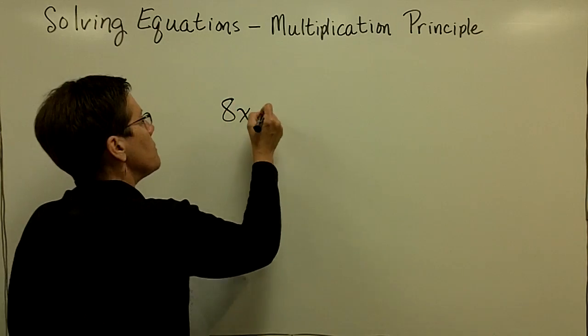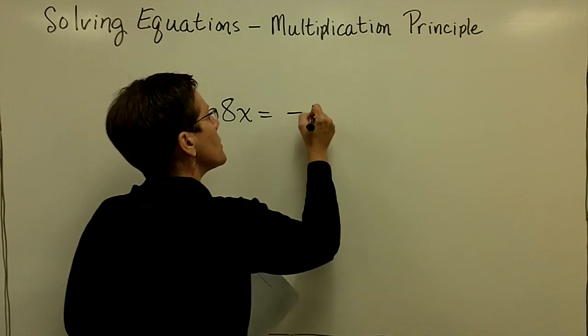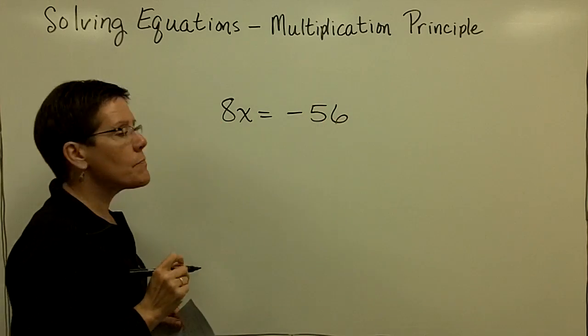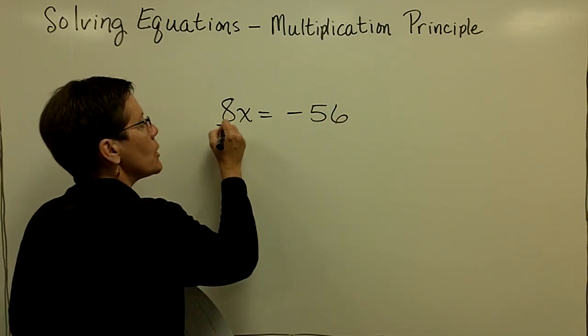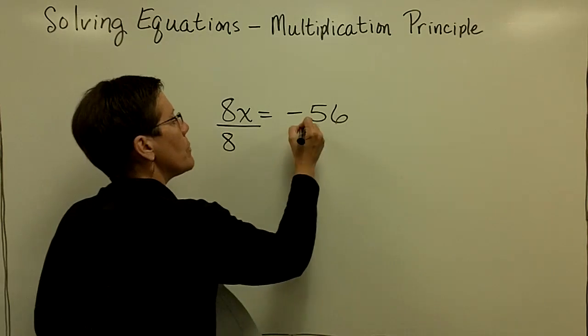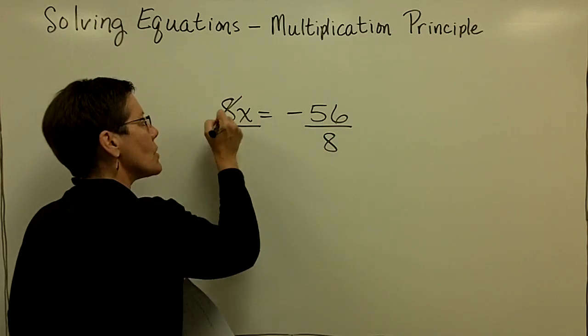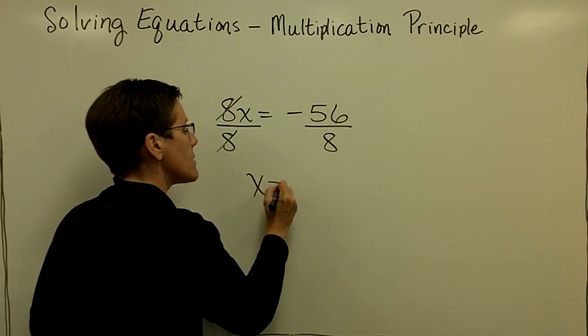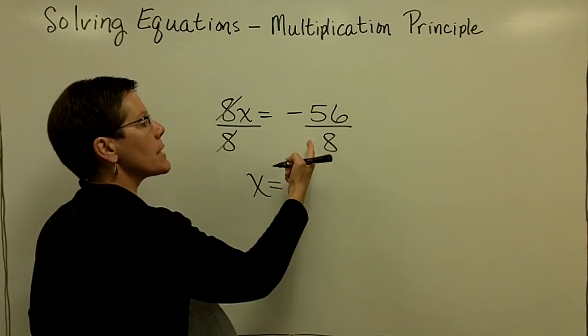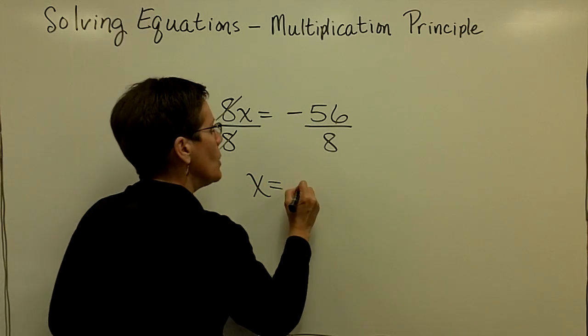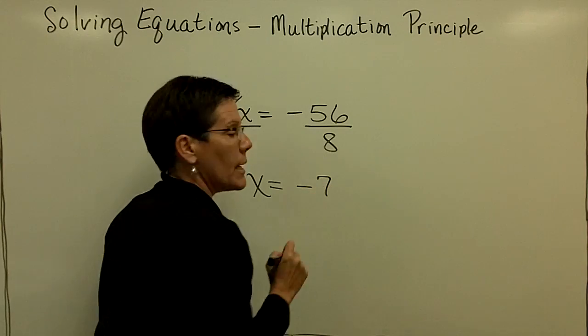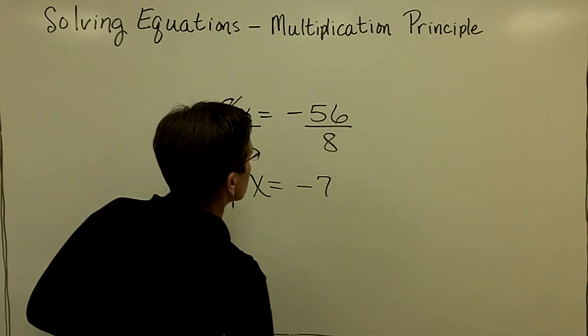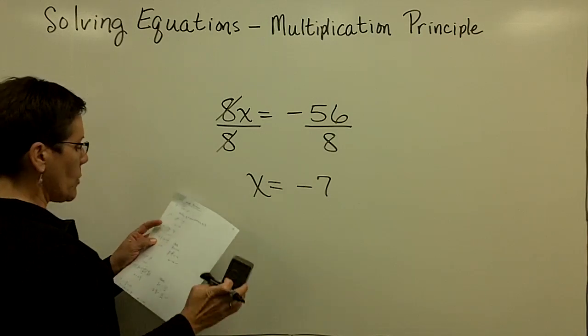Let's take a look at 8x equals a negative 56. And if I want to get the variable x alone, I'm going to divide both sides by 8, so that will become a 1x. And then a negative 56 divided by a positive 8 will be a negative number, and that is a negative 7. Again, check it. We'll be doing some checks as I do a couple more. Let's do one with fractions.